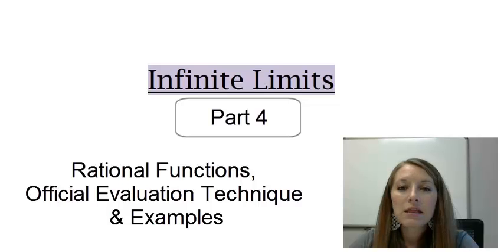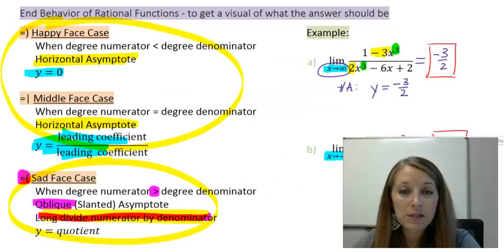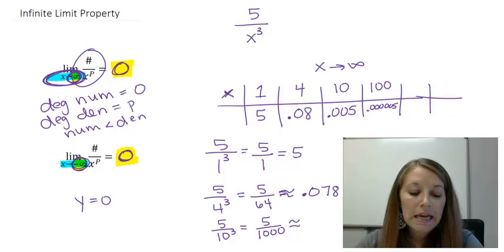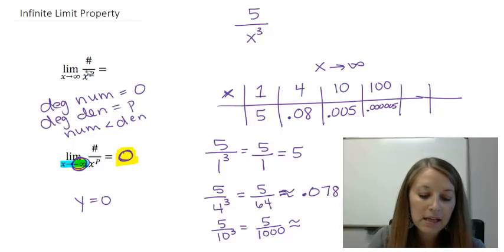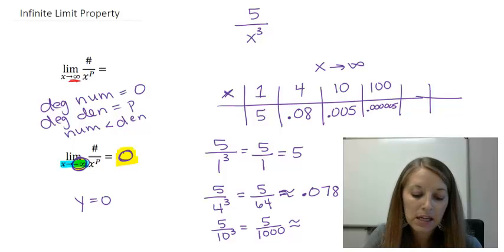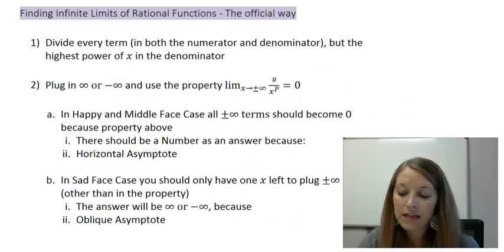Continuing on with infinite limits, the last time I left you hanging on how to find the infinite limits of rational functions, so that's where I'm going to jump right into. We reviewed how to find the end behavior of rational functions using the face case, and we learned a property we're going to use to our advantage: any time we have a constant on top divided by x to any power in the denominator, as we take the limit approaching either positive or negative infinity, our answer is going to be zero.